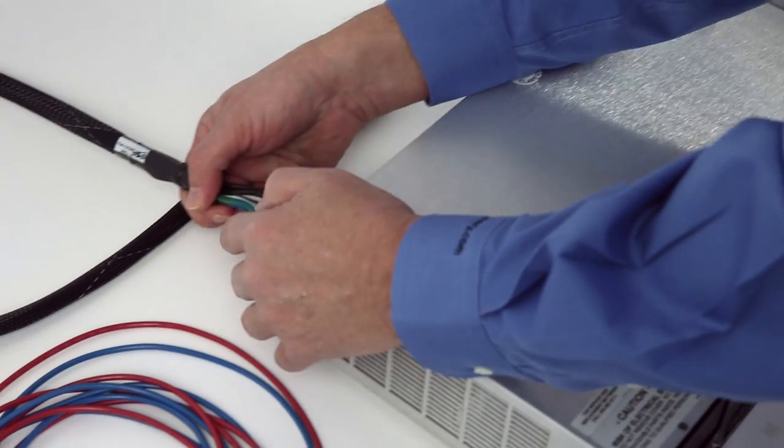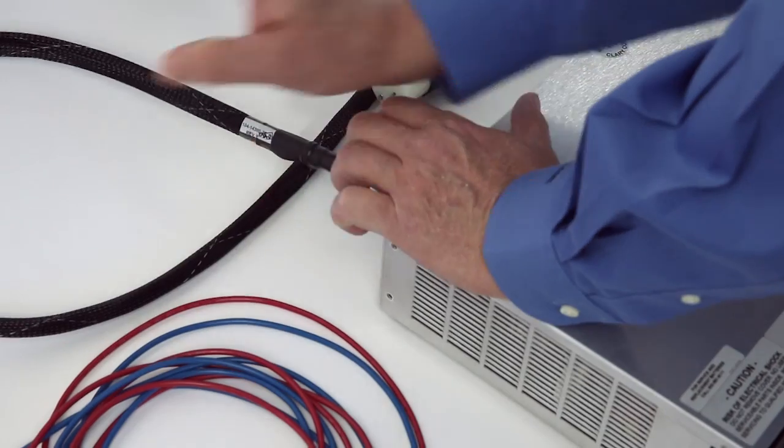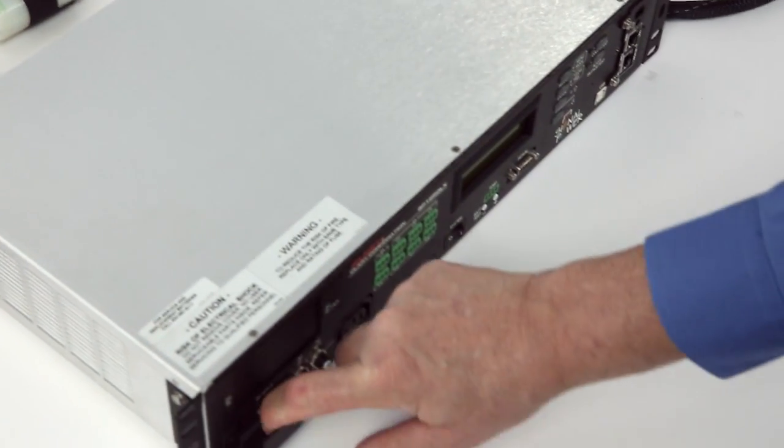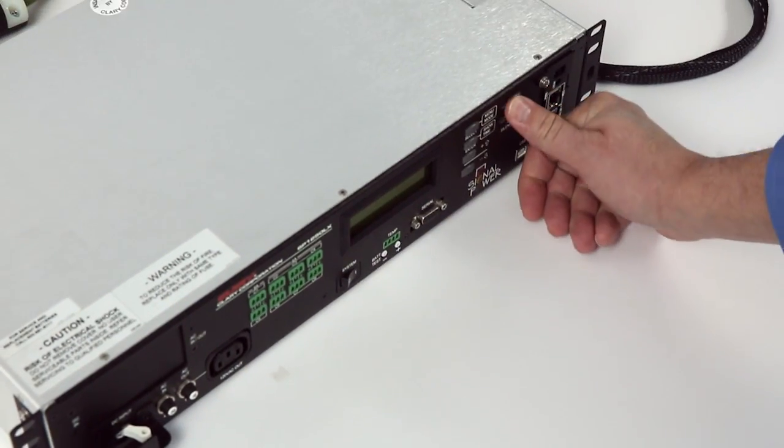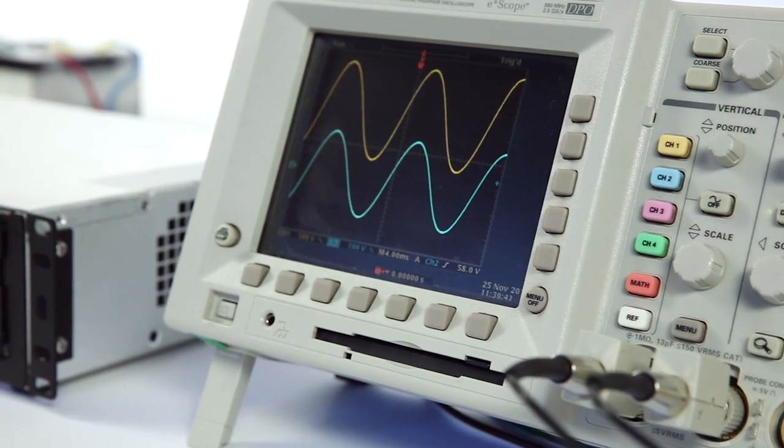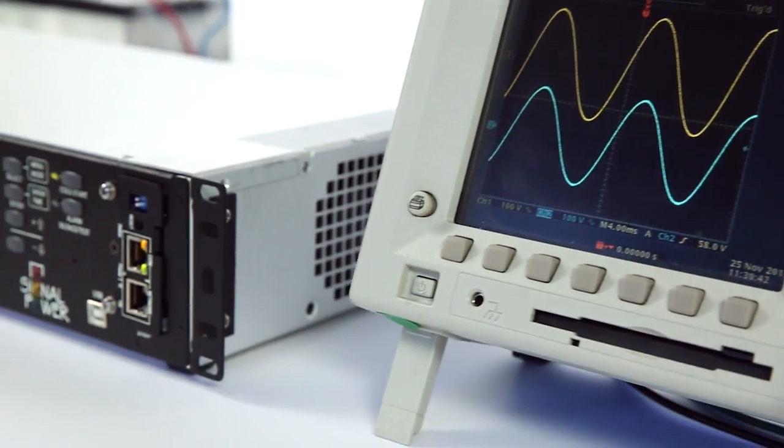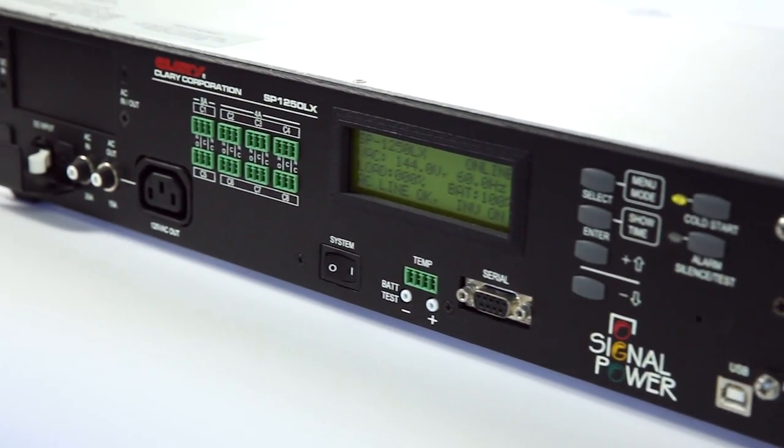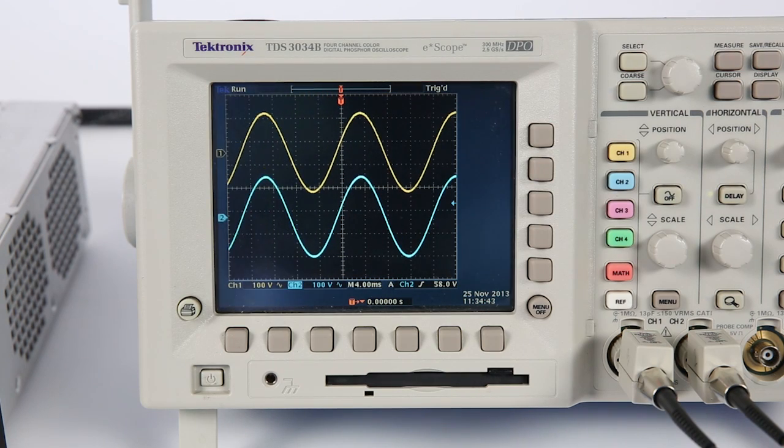To demonstrate Clary's uninterruptible power supply for traffic applications, power conditioning and backup power supply, we have set up an AC power source generator to input wave anomalies. The oscilloscope displays the input and output frequencies and demonstrates how the Clary UPS is immune to the input fluctuations. The immunity delivers clean power for all your traffic applications.